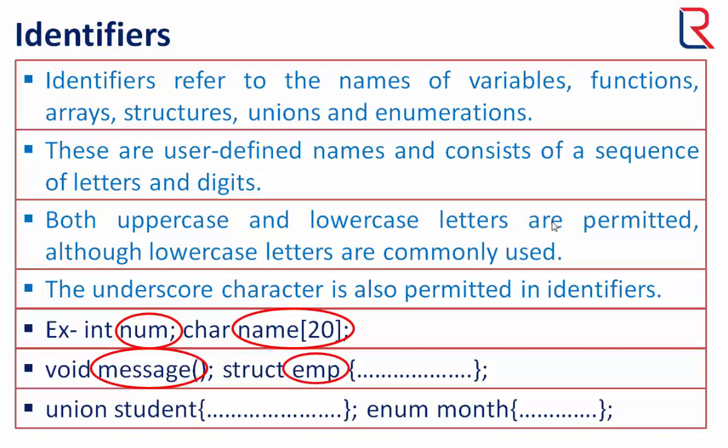Emp is a structure. Structure refers to the user defined data type — we can make our own data type with the help of structure. Student is a union which is almost the same as structure but the difference is memory storage capacity. Month is an enumeration which gives the functionality for name to integer conversion. We will see enum in detail in later videos.